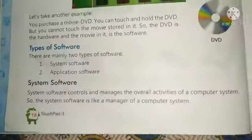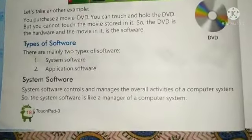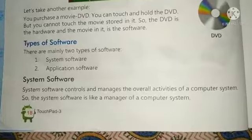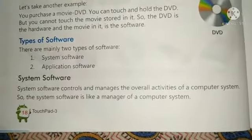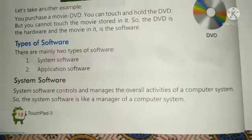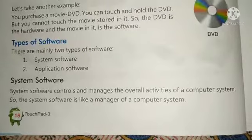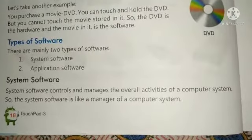What are the types of software? Basically, there are two types: system software and application software.